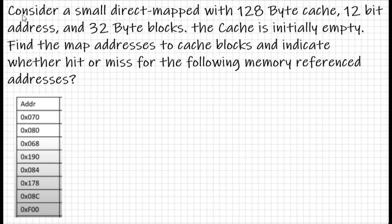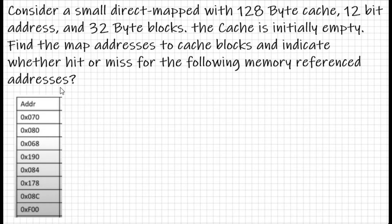Today's question: consider a small direct-mapped cache with 128-byte cache, 12-bit addresses, and 32-byte blocks. The cache is initially empty. Find the mapped addresses to cache blocks and indicate whether hit or miss for the following memory referenced addresses. The cache size is 128 bytes, address size is 12 bits, and block size is 32 bytes.